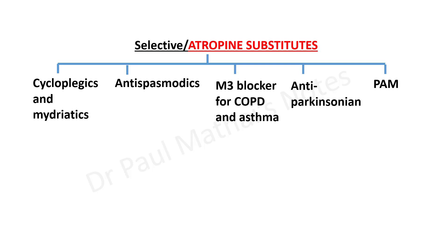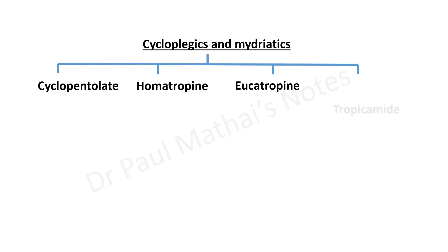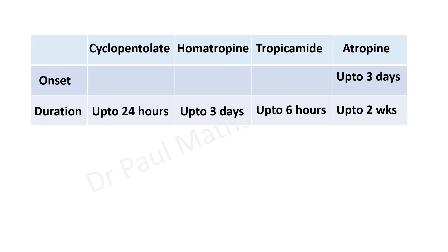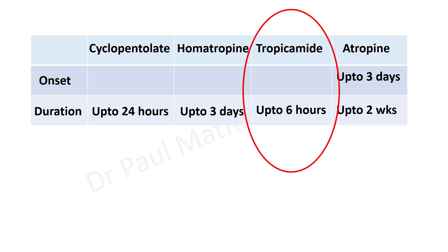Regarding selective atropine substitutes: these are classified into cycloplegics and mydriatics, antispasmodics, drugs for COPD and asthma, anti-Parkinsonian drugs, and pre-anesthetic medication. The cycloplegics and mydriatics — cyclopentolate, homatropine, eucatropine, and tropicamide — have a faster onset and shorter duration of action than atropine. Among these, tropicamide has the shortest duration of action at approximately six hours, making it a very popular choice for routine fundoscopy.